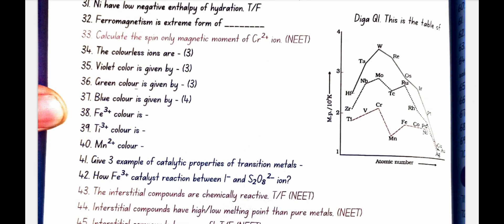Fe3 plus colour is yellow. Ti3 plus colour is purple. Mn2 plus colour is pink.